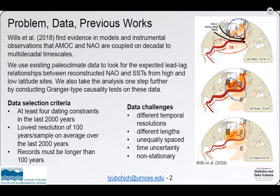The research by Wills and colleagues finds evidence in models and instrumental observations that the AMOC and SSTs are coupled at different time scales, as shown on the right. We use the paleoclimate data to test these relationships using cross-correlations of time series and Granger causality tests.